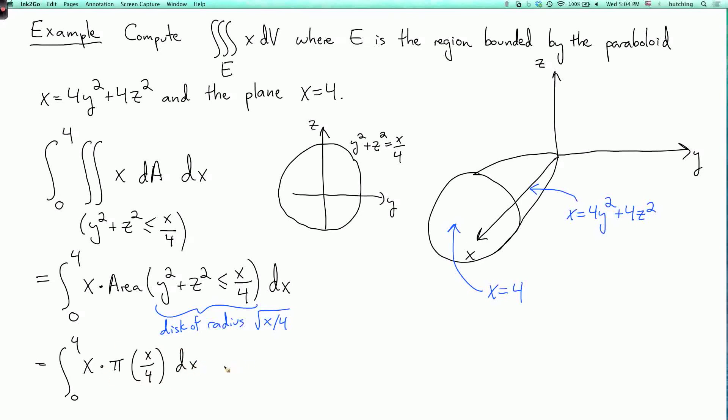So I have pi x squared over 4, and then the integral of this is pi x cubed over 12, evaluated at 4 and 0. So this is pi times 64 over 12 minus 0. And I can simplify this to 16 pi over 3.